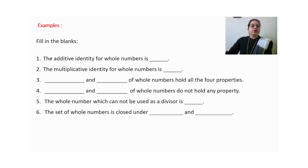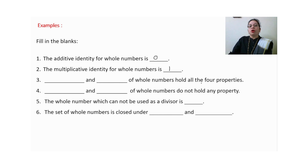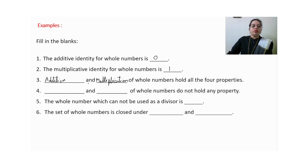Now some examples and fill-in-the-blanks. Additive identity for whole numbers is zero; multiplicative identity for whole numbers is one. Please pause the video, fill in the blanks yourself, then continue to check your answers. Addition and multiplication hold all four properties; subtraction and division do not hold any property for whole numbers.